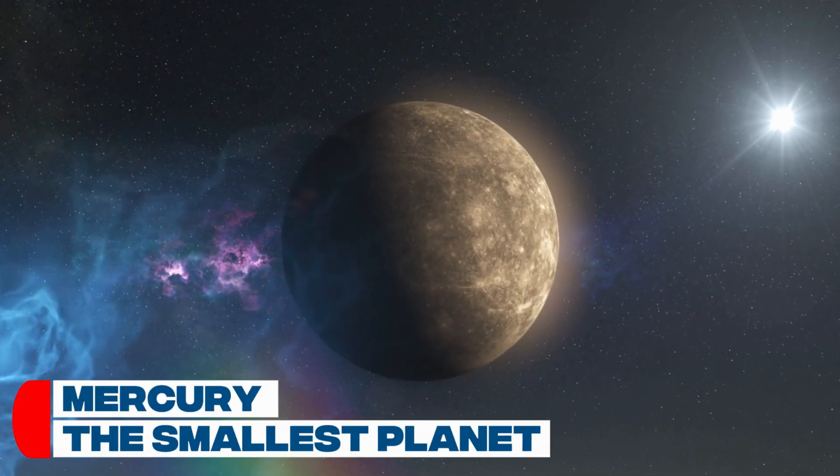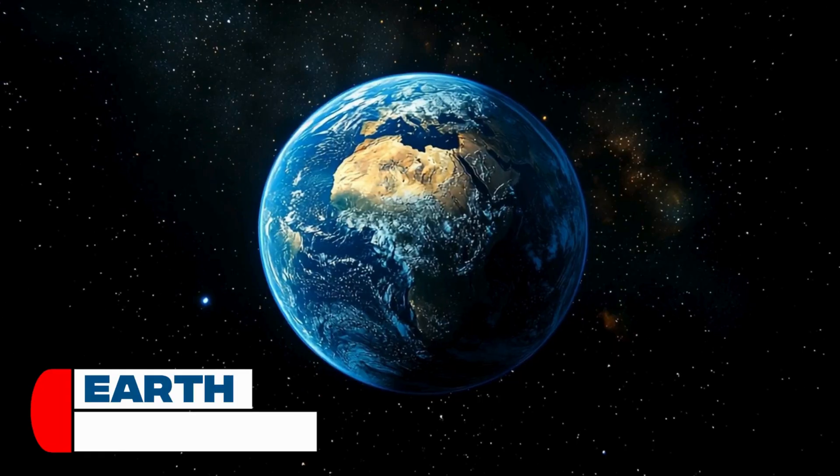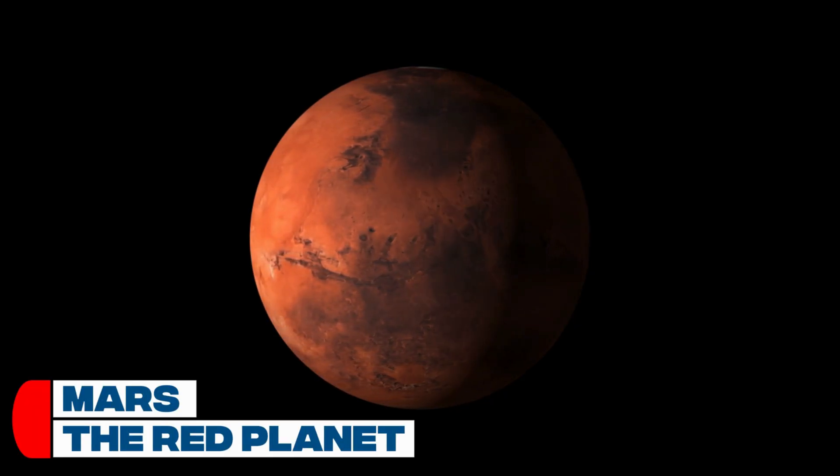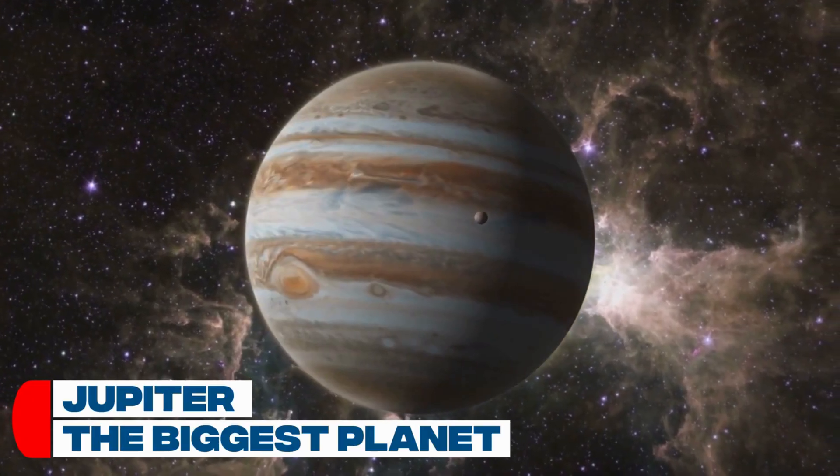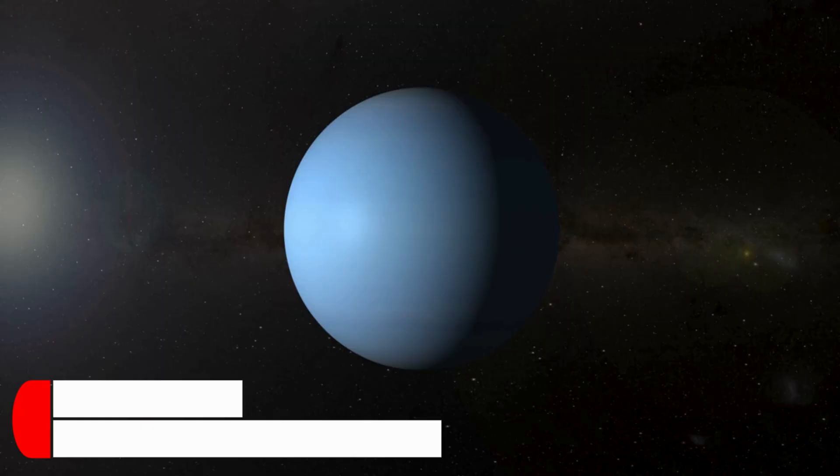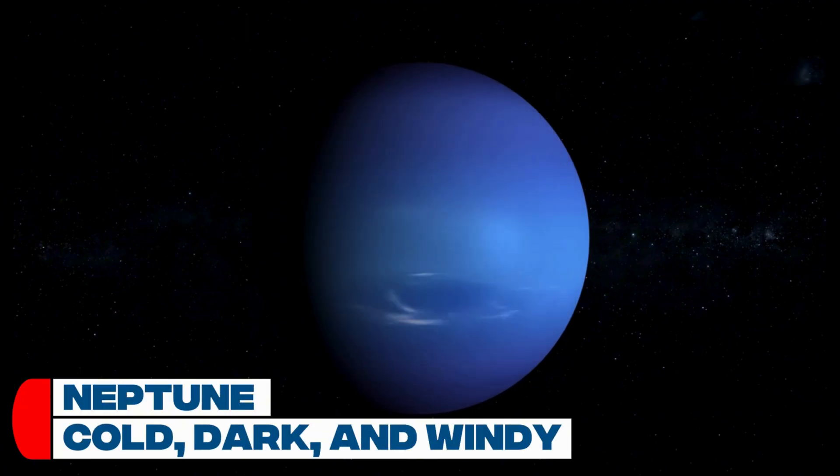One, Mercury, the smallest planet. Two, Venus, super hot with thick clouds. Three, Earth, our home. Four, Mars, the red planet. Five, Jupiter, the biggest planet. Six, Saturn, famous for its rings. Seven, Uranus, spins on its side. Eight, Neptune, cold, dark, windy.